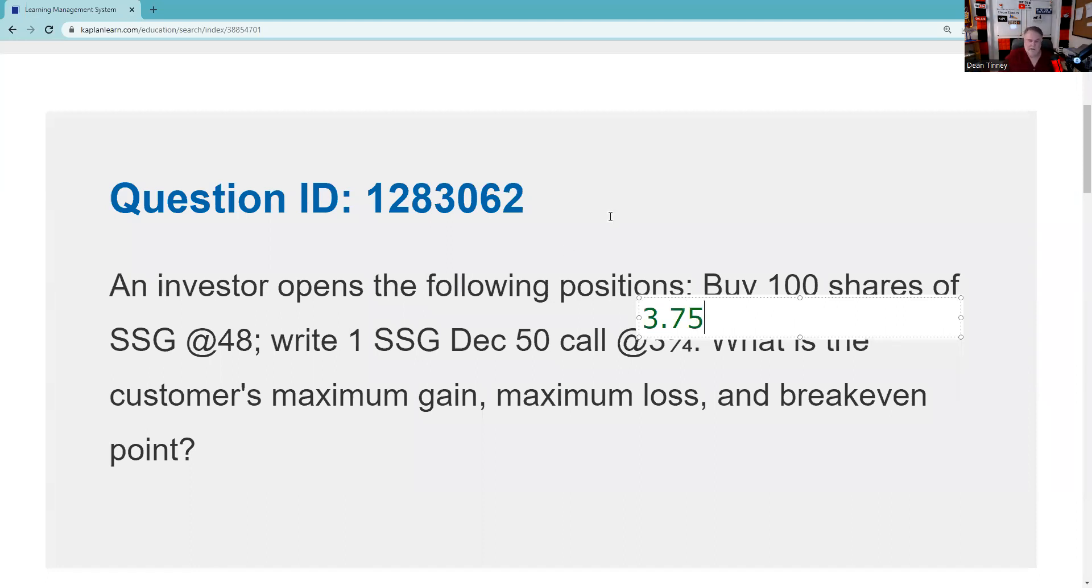Okay, so a lot going on in this question: what is the customer's max gain, max loss, break-even point? So I think what I would do, I always recommend we fire up a T to track dollars out, dollars in. You can either memorize stuff, but I always tell people if you go down the memory road, the amount of things you're going to have to memorize is going to continue to compound. So I like to use dollars out versus dollars in.